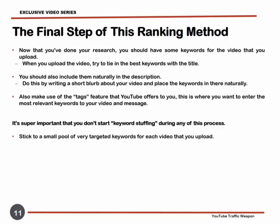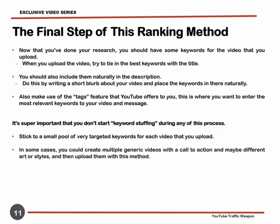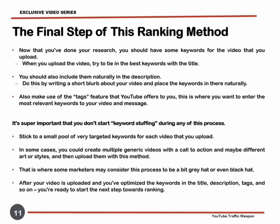Stick to a small pool of very targeted keywords for each video you upload. In some cases, you could create multiple generic videos with a call to action and maybe different art or styles, and then upload them with this method — this is where some marketers may consider this process to be a bit gray hat or even black hat. After your video is uploaded and you've optimized the keywords in the title, description, and tags, you're ready to start the next step towards ranking.